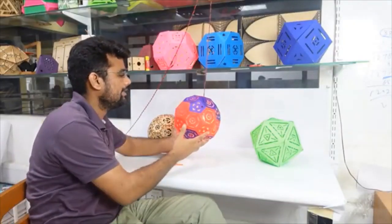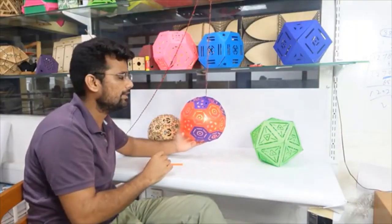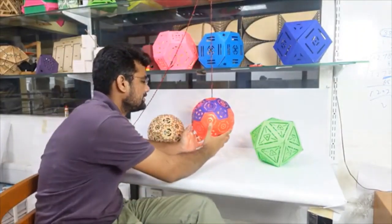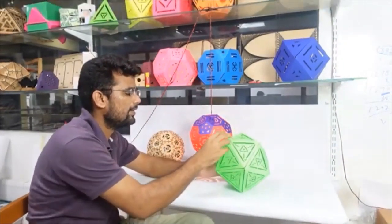Here is our truncated icosahedron ready. If we talk about the math behind it, we have to first understand its basic structure, the icosahedron, from which this structure is obtained.